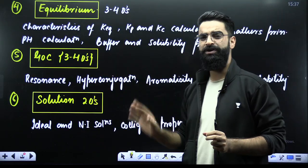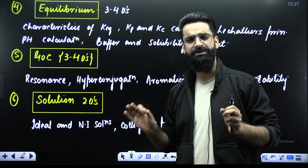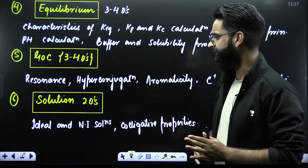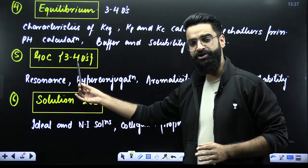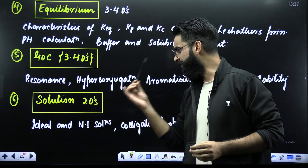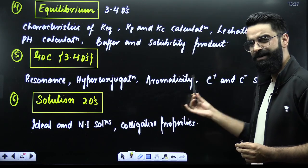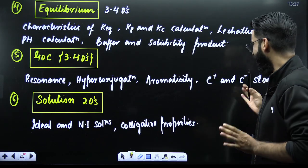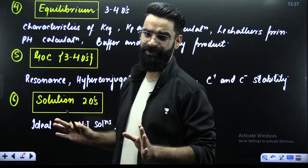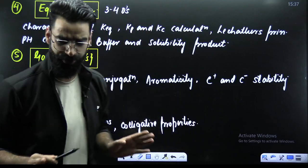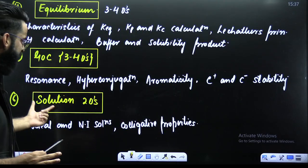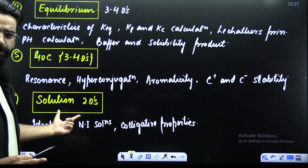When it comes to General Organic Chemistry (GOC), every year almost three to four questions again. The short topics are: resonance, hyperconjugation, aromaticity, carbocation stability, and carbanion stability. These are the short topics from which questions will be asked every year. Then comes the chapter solutions.